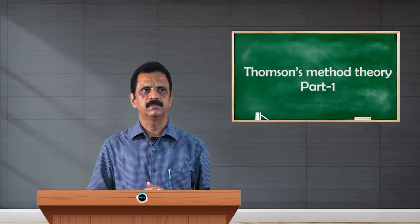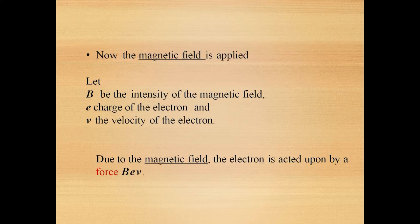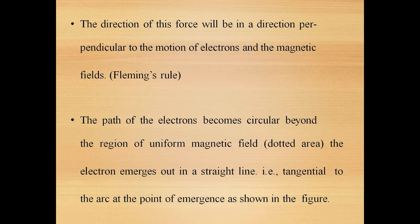Now let us discuss the theory of this experiment. First, the electric and magnetic fields are removed and the spot is formed at S. Now the magnetic field alone is applied. The magnetic field is B, the electronic charge is e, and the velocity of the electrons is V. The magnetic force experienced is given by the Lorentz force: BeV. The direction of this force, as given by Fleming's left hand rule, is perpendicular to the plane containing the velocity and the magnetic field.